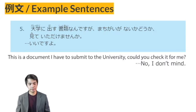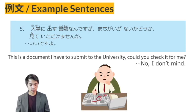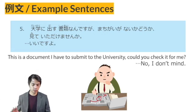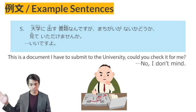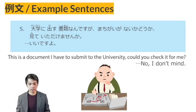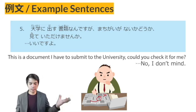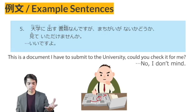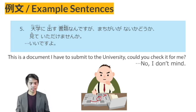Example sentence number 5: Daigaku ni dasu shorui nan desu ga, machigai ga nai ka doka mite itadakemasen ka? Ii desu yo. DAIGAKU NI — to the university — DASU — to submit. SHORUI — a document to be submitted to the university. MACHIGAI GA NAI KA DOKA — if it has a mistake or not. MITE ITADAKEMASEN KA — asking someone a favor, can you please check it for me? Ii desu yo — sure, that's fine.